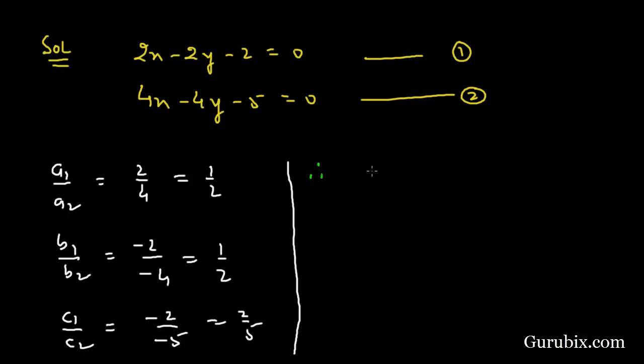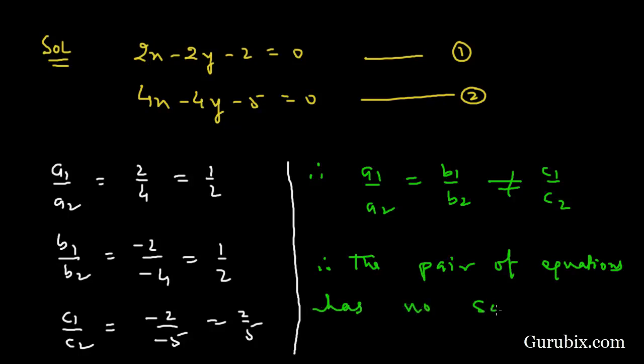This means A1 over A2 equals B1 over B2, but not equals to C1 over C2. This means the pair of equations has no solution and is inconsistent.